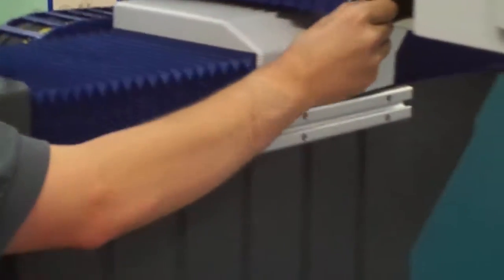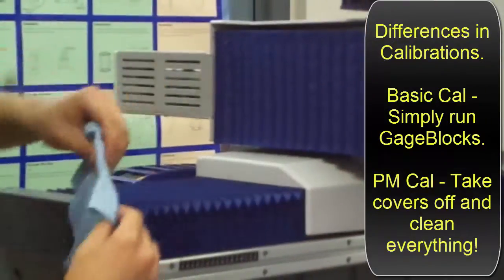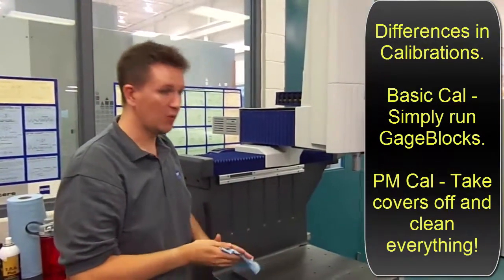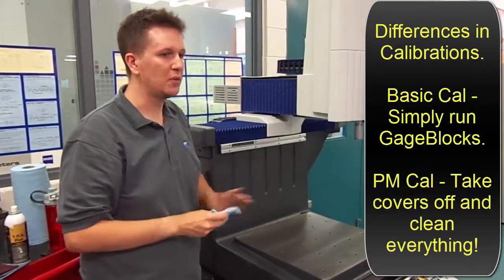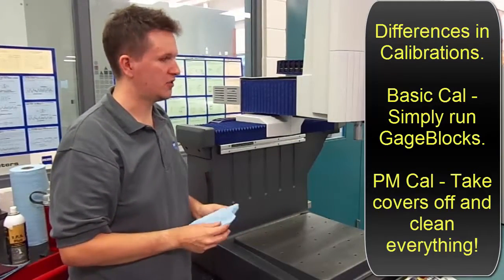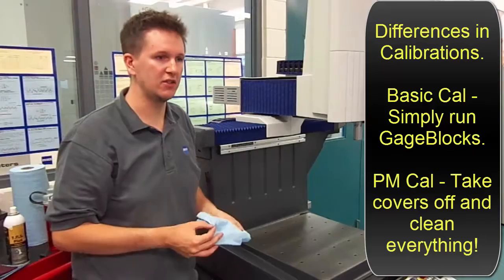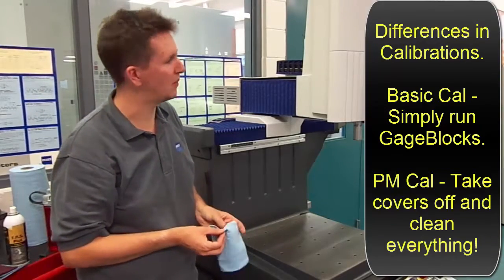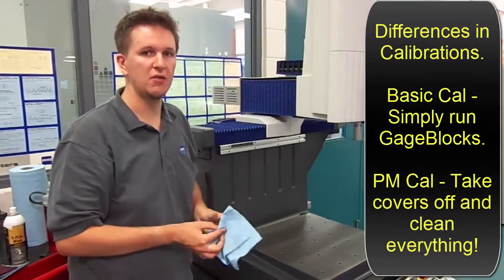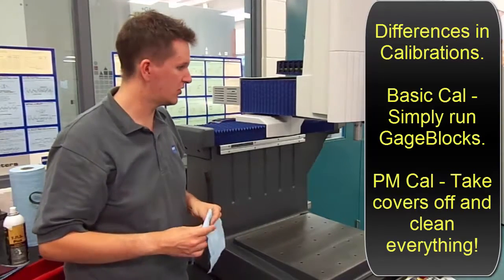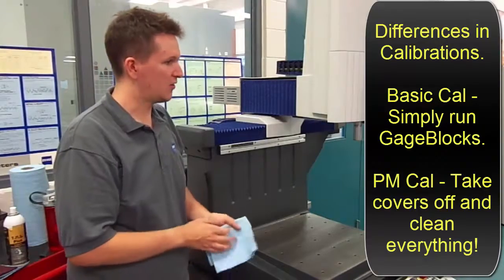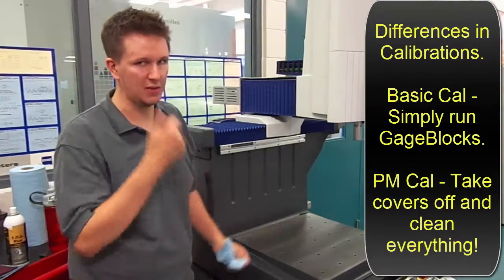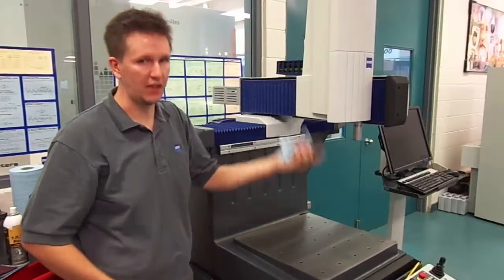So that's actually a good opportunity to talk about what's the difference between a PM and a basic calibration. The basic calibration is just where we run the gauge that we had shown earlier. And there's no cleaning, there's no maintenance. It's just the gauges and we'll make the CA correction as necessary. Now the maintenance on a Duramax is we take all the covers off and clean and re-grease the guideways, the spindles, tune the drives, clean the scales, adjust the reader heads, all the stuff to make sure the machine is running 100% like it would have left the factory. And then do the calibration as well.